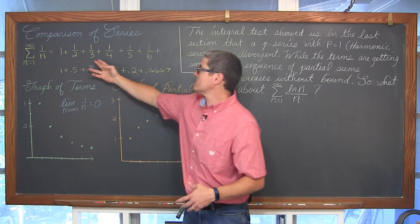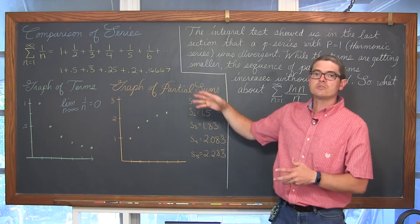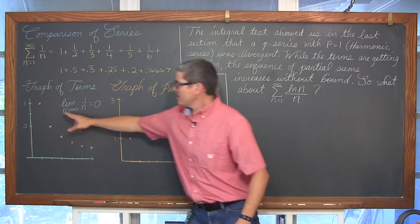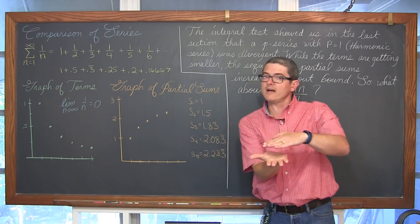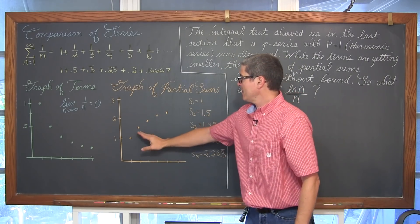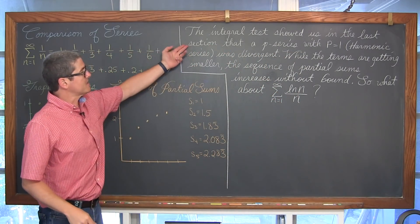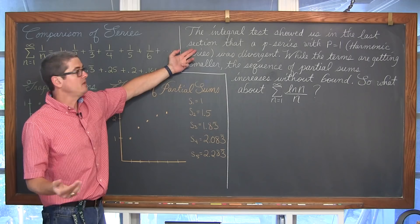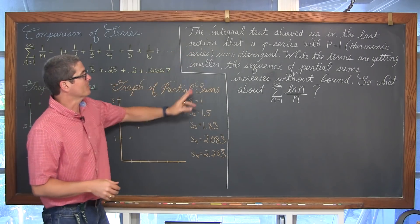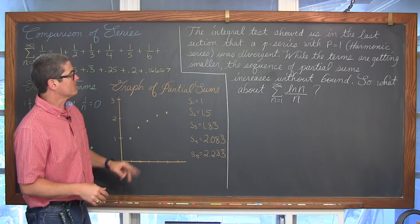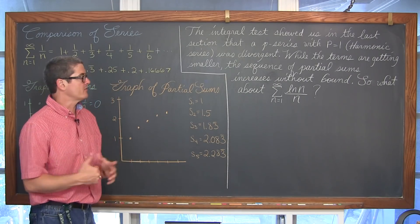Even though we are adding by smaller and smaller values, and a sub n approaches zero, those individual terms don't approach zero fast enough. So when you look at the partial sums, the p-series with p equal to 1 — the harmonic series — is divergent. While the terms are getting smaller, the sequence of partial sums increases without bound.